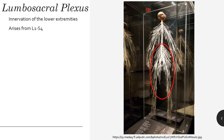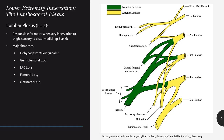These nerve roots arising from L1 to S4 provide the motor and sensory innervation of the lower extremities. The lumbar plexus arises from the L1 through L4 lumbar nerve roots and is responsible for much of the motor and sensory innervation to the thigh, as well as going down to the medial leg and ankle, and also includes most of the knee. The major branches coming off the lumbar plexus are the iliohypogastric, ilioinguinal, genitofemoral, lateral femoral cutaneous, femoral, and obturator.